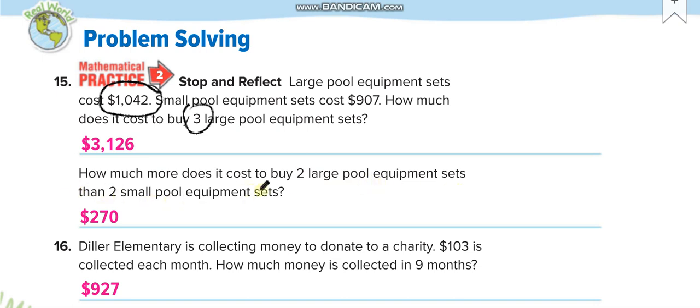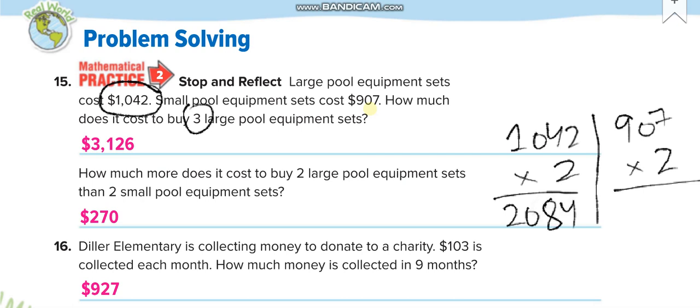How much more does it cost to buy 2 large pool equipment sets than 2 small pool equipment sets? First you multiply 2 with the cost of large pool equipment set and 2 with the cost of small pool equipment set. So first you multiply 1,042 times 2 and 907 times 2, and then you will find out their difference. 1,042 times 2 is 2,084 dollars, and 907 times 2 equals 1,814 dollars.